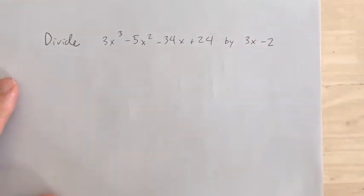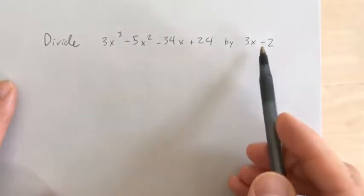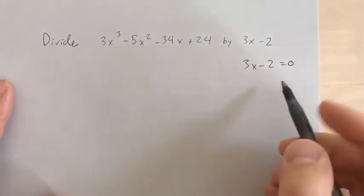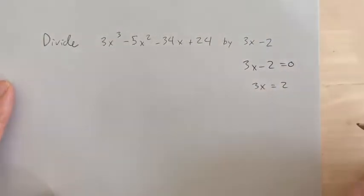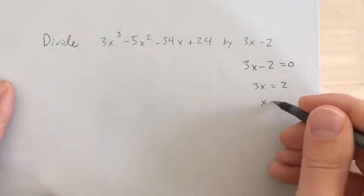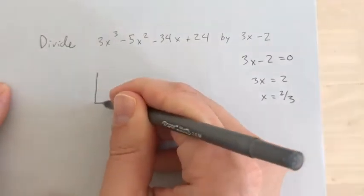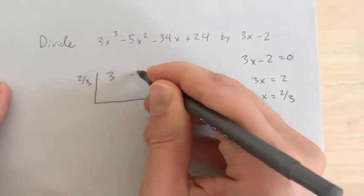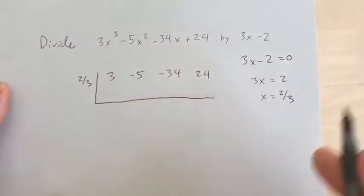Let's do another example. Divide 3x cubed minus 5x squared minus 34x plus 24 by 3x minus 2. The problem with this is if I go to set up synthetic division, I would have to set 3x minus 2 equal to 0 and solve — add 2 to both sides, so 3x equals 2, divide by 3, x equals 2 thirds. This would mean I'd set up synthetic division like this: 2 thirds, then 3, negative 5, negative 34, and 24.